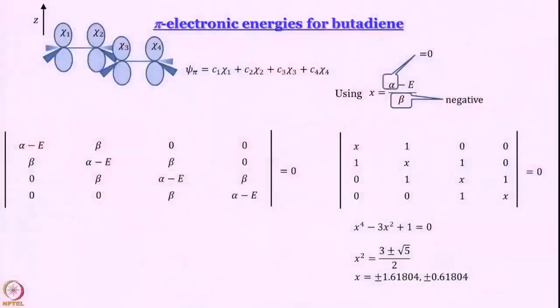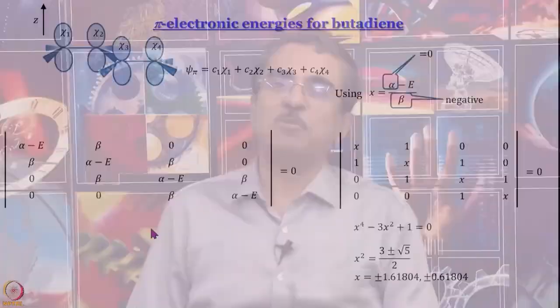Then we simplified it a little bit and wrote the determinant in terms of x, where x is essentially energy in terms of beta, setting alpha equal to 0. We found some values of x, and from there we constructed the energy diagram. Once we know this energy diagram, from our knowledge of ethylene we know we can plug this expression for energy back into the 4 linear equations for the molecular orbitals and determine the coefficients.